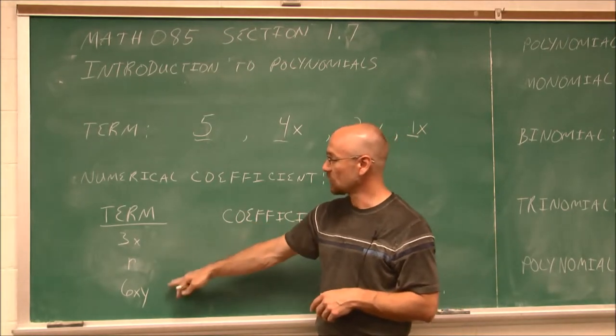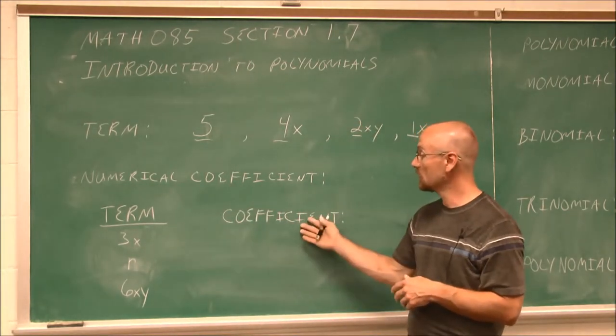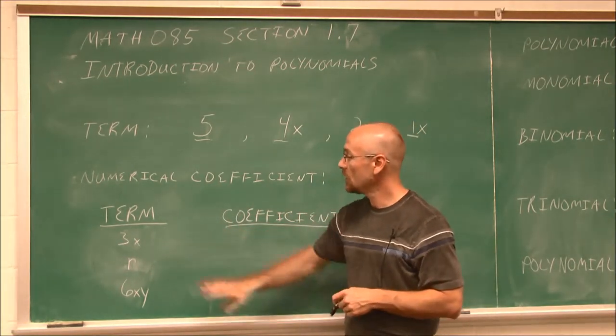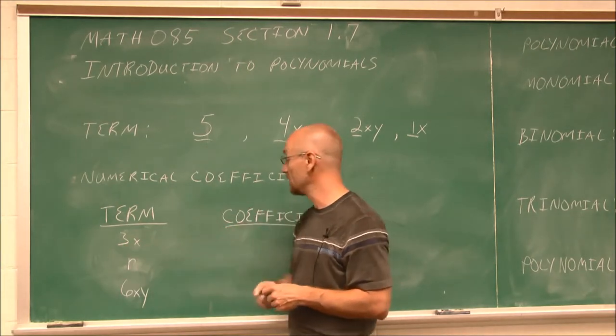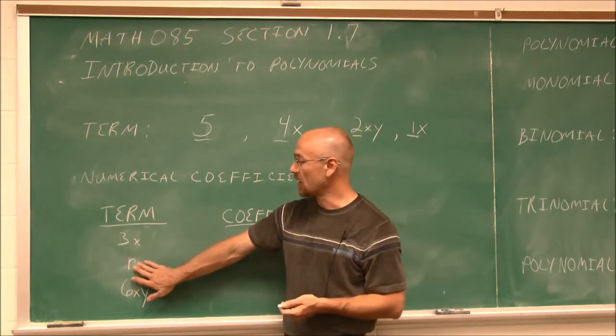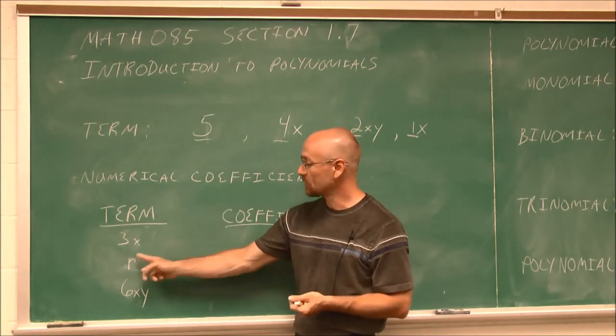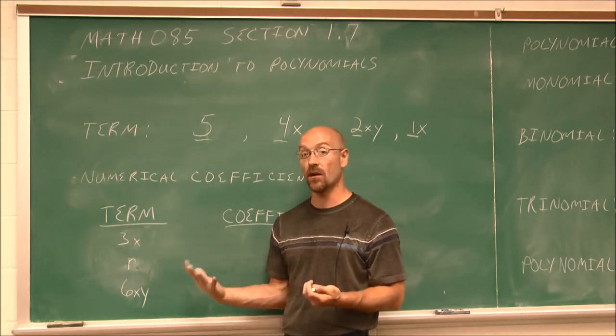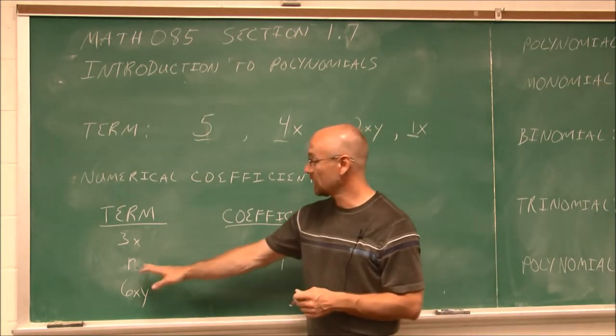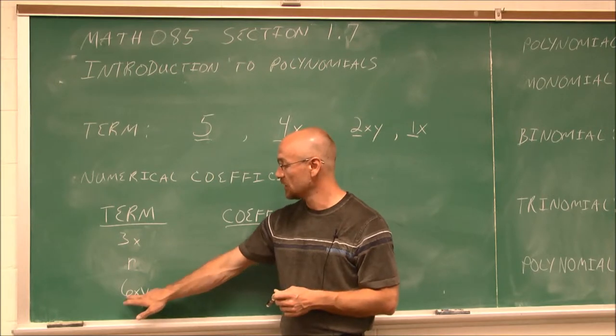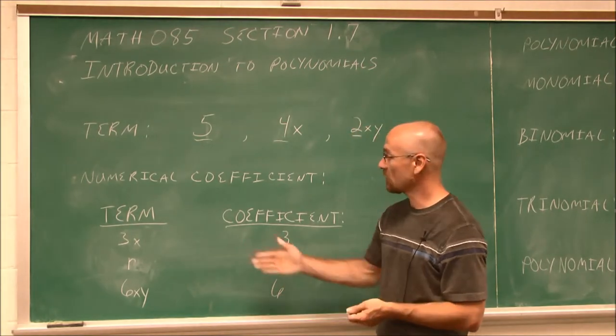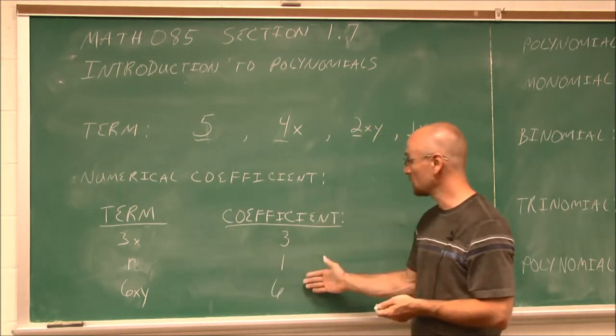So the next thing we're going to do is we're going to look at some terms and determine what are their numerical coefficients. So what is the coefficient of each of these terms? Well, if we look at the first term, the number I see is a 3. So I know that its coefficient, or its number, is 3. Here I just see the r. What do I have to assume? I have to assume I have at least one of these r's to have any r's at all. So I assume that its numerical coefficient is 1. If we look at the next term, well, there's a couple of variables here. But it's the number I'm concerned with. So its number is 6. That is its coefficient. So we have the coefficients of 3, 1, and 6.